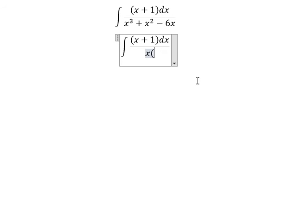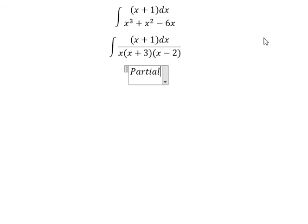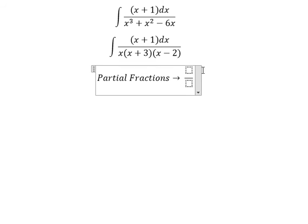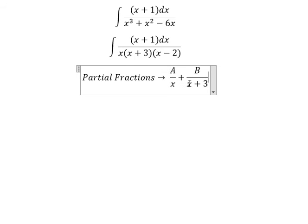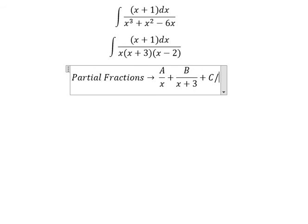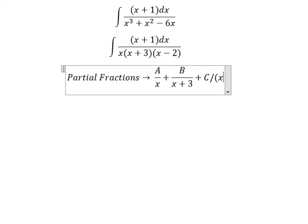We factor as x multiplied by (x+3) and (x-2). Now we need to use partial fractions, so we put capital A over x, capital B over (x+3), and capital C over (x-2).